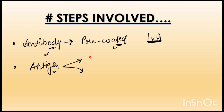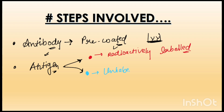Second component: antigen. We use two types of antigen. Antigen 1 is radio-labeled - shown in red color, this is the radioactively labeled antigen. Antigen 2 is unlabeled antigen from patient blood - this is without any radioactive labeling, it comes from the patient's blood sample.